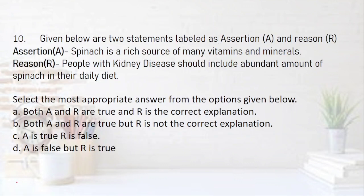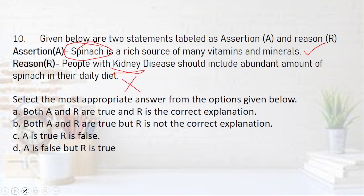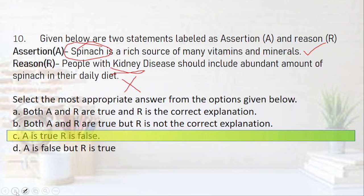The last question — question ten: assertion: spinach is a rich source of many vitamins and minerals. Reason: people with kidney disease should include abundant amounts of spinach in their diet. Spinach is not recommended for people with kidney diseases because it is very rich in oxalates. So A is true and R is false, making the right answer option C.